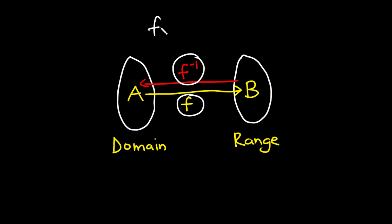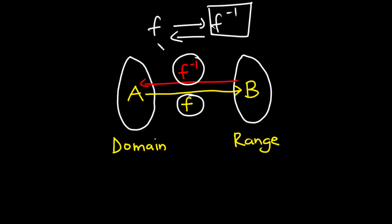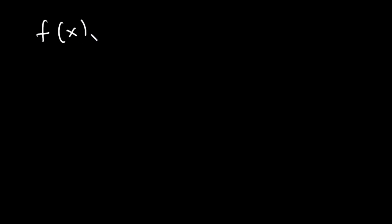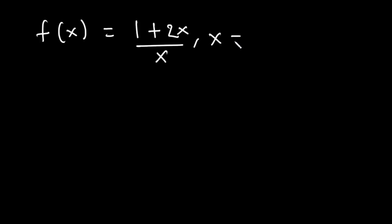Notice that the domain of an inverse function is the range of the original function. Given a function f whose inverse is f⁻¹, the inverse of this function gives the original function f. Now let's move ahead and solve some examples. Let's say we have a function f(x) = (1 + 2x) / x, where x is not equal to zero.